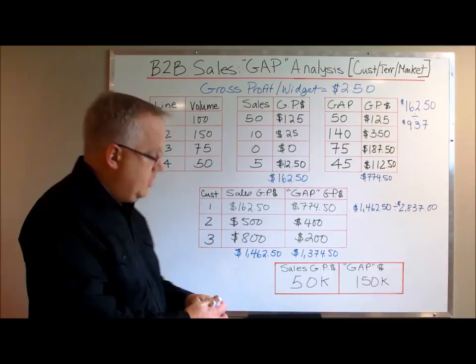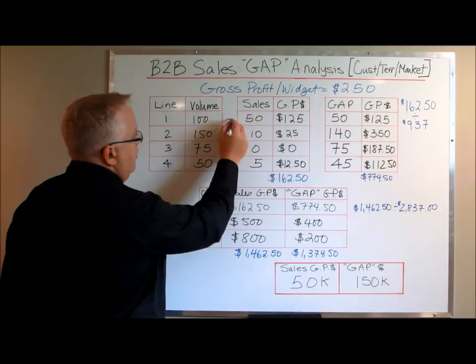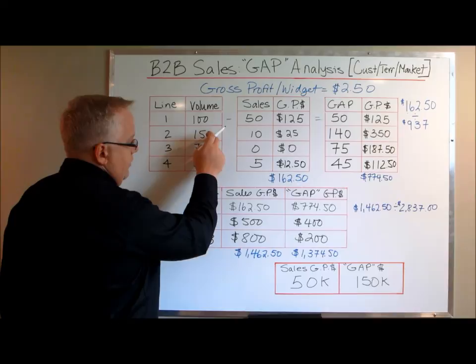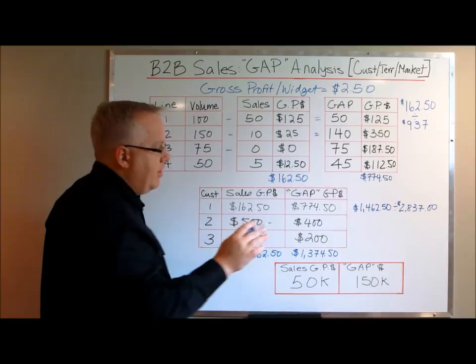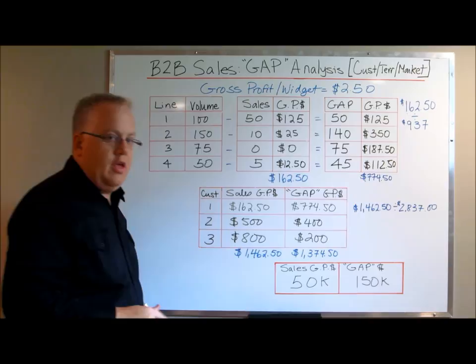The gap analysis is very simple. There's a potential for 100 and I'm only selling 50, so my gap is 50. For model number two the OEM sells 150 machines and I'm only selling 10, so 150 minus 10 is 140. For model three, 75 minus zero — I'm not selling anything for that one — is 75. And 50 minus 5 is 45.